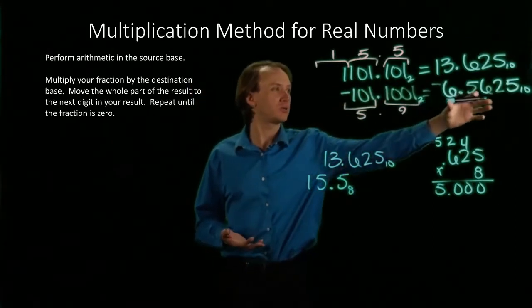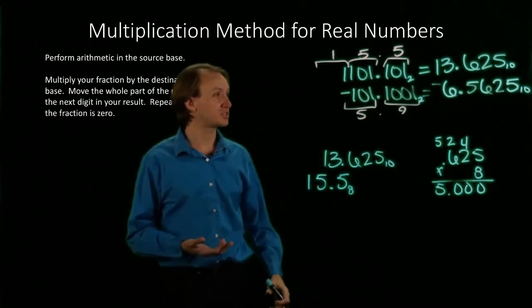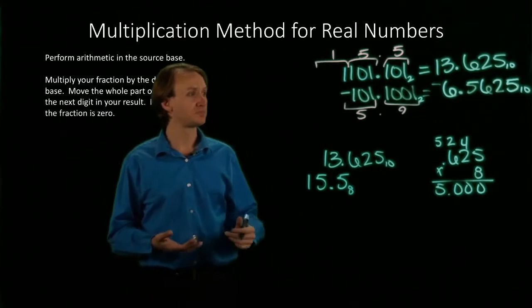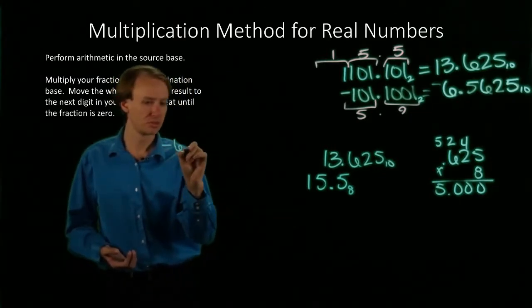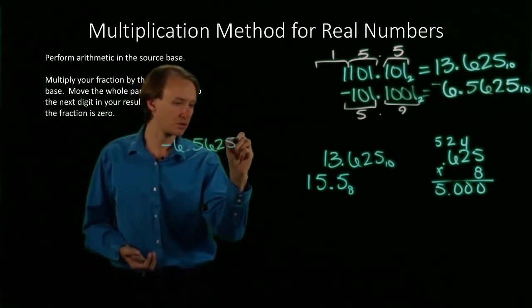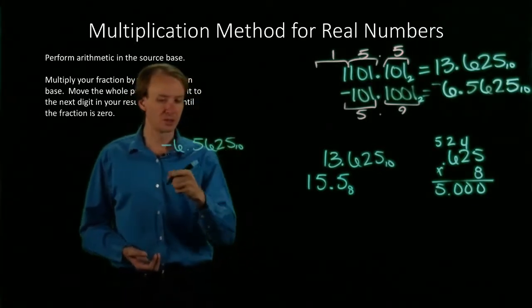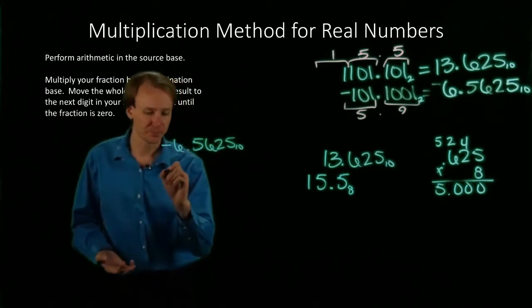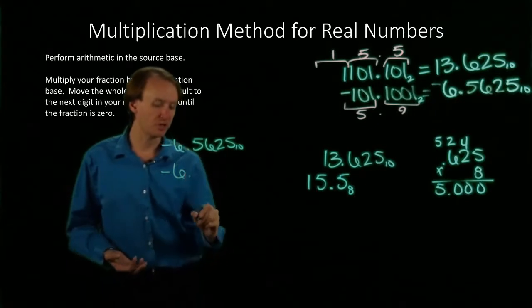I can do the same thing with 6.5625 and convert that to hexadecimal. The 6 in decimal will turn into a 6 in hexadecimal as well, so I'm just going to keep that.